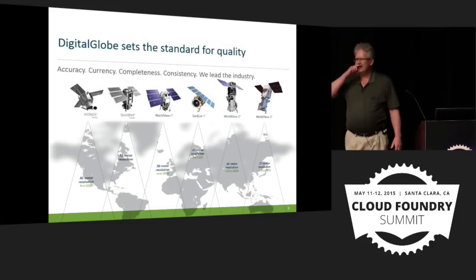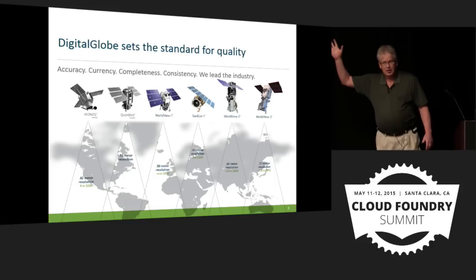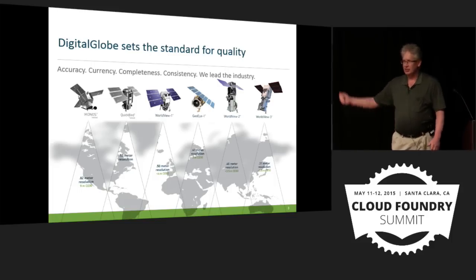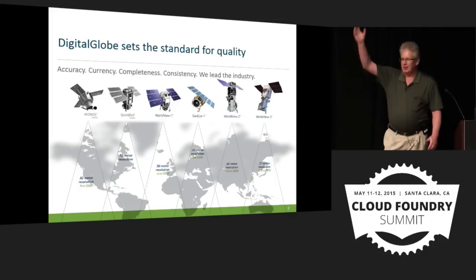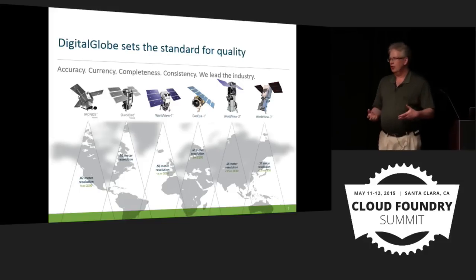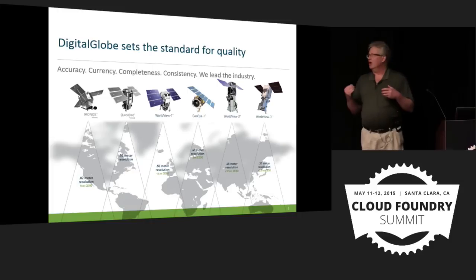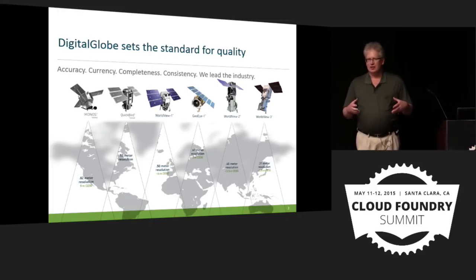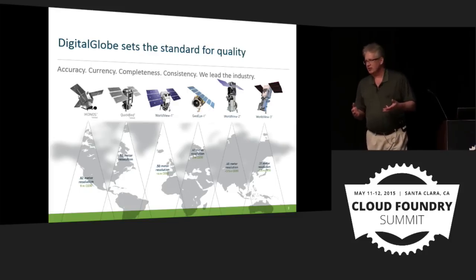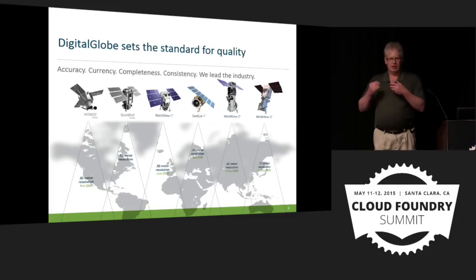Digital Globe — how many of you use Google Maps? How many of you have gotten in there and punched the button that says 'show me satellite imagery'? If you've done that, then you've interacted with products from Digital Globe. We fly satellites. We collect high volume, high resolution, high accuracy data from our satellites. We pull it down to the ground, do a bunch of digital image processing to create all sorts of different kinds of imagery, and then distribute that out across the world.